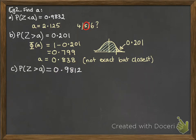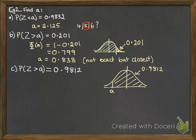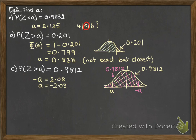Next: the probability of z being greater than a is 0.982. Let's draw a picture — 0.982 is more than half of the graph, so it must look like this. We want to change that into the equivalent less-than form so we can read it off the tables. We turn that around, and that would be minus a. Reading off the tables, minus a would have to be 2.08, so a would be minus 2.08.